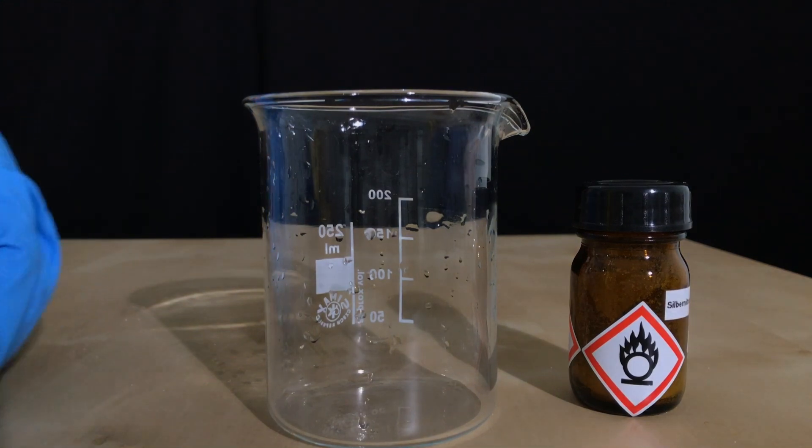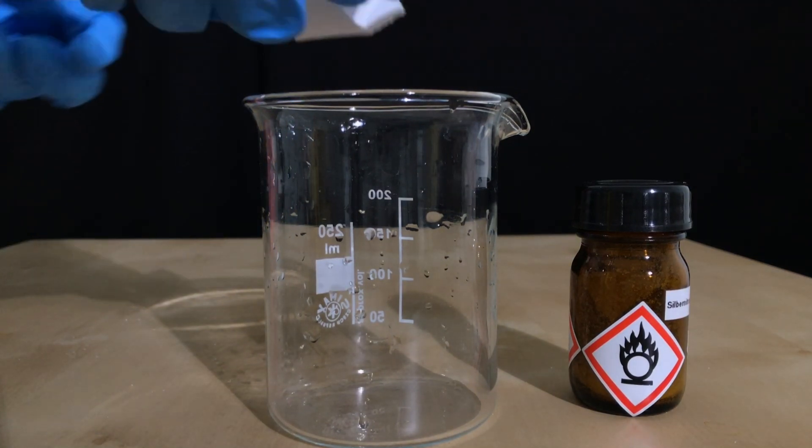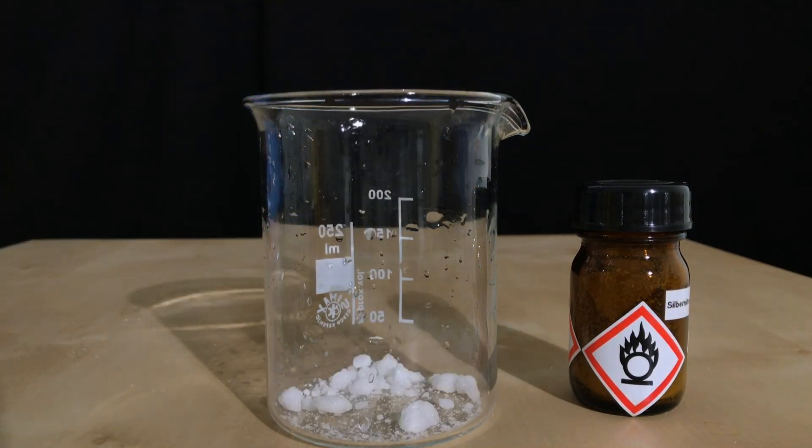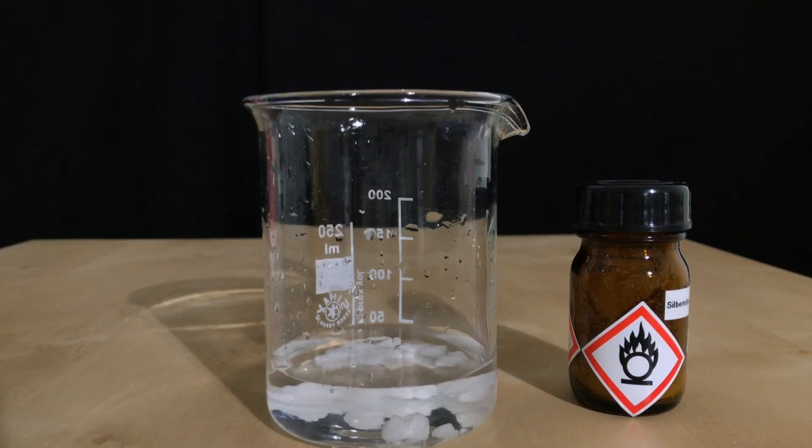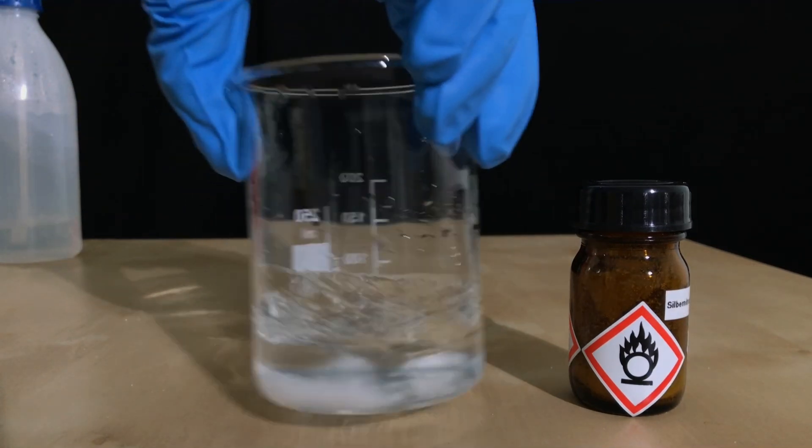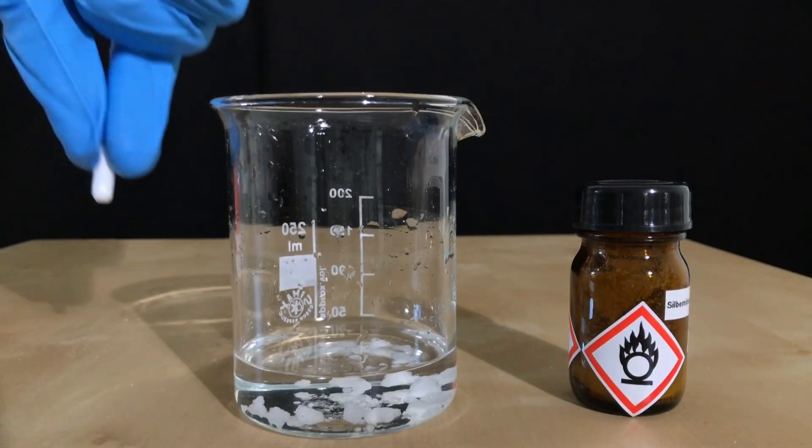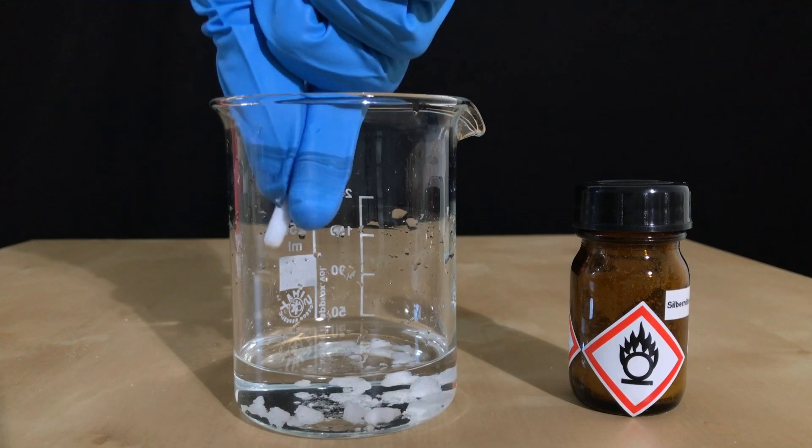To be able to continue with the experiment, we need to dissolve the silver nitrate in some distilled water. Therefore, we added it to a beaker, followed by a bunch of distilled water. The exact amount doesn't matter, as long as all of the silver nitrate is dissolved. Before proceeding, we quickly dropped in a stir fish.